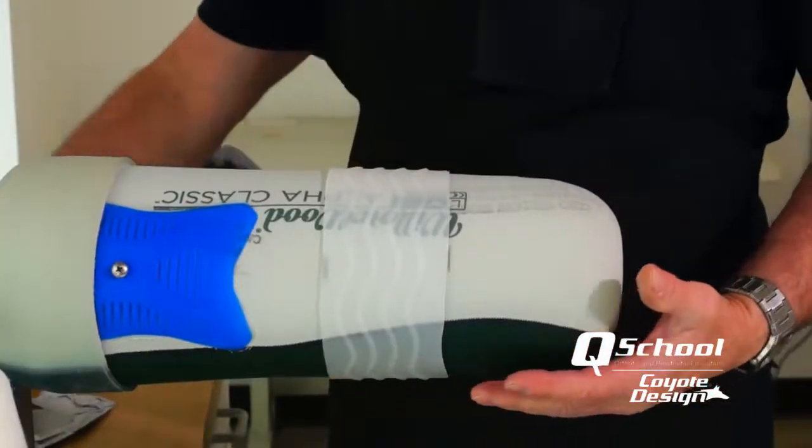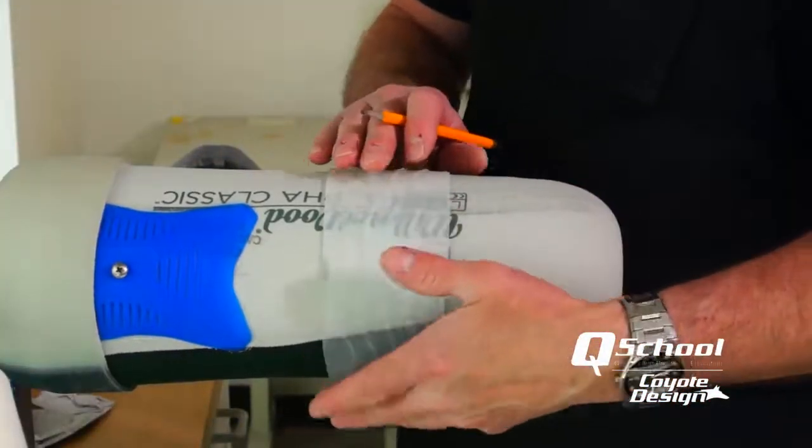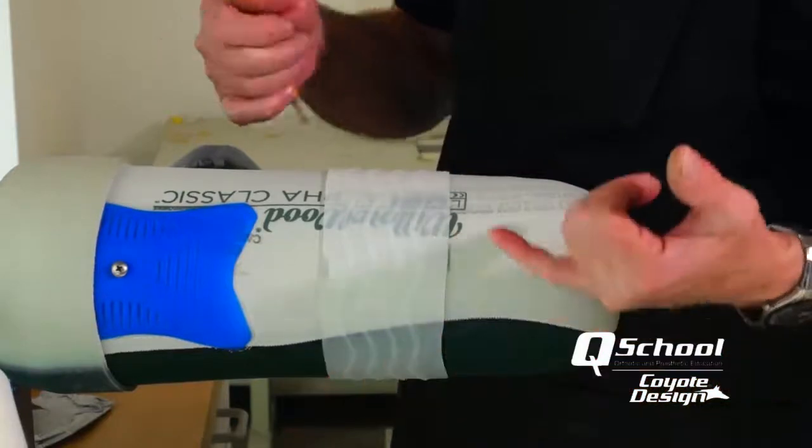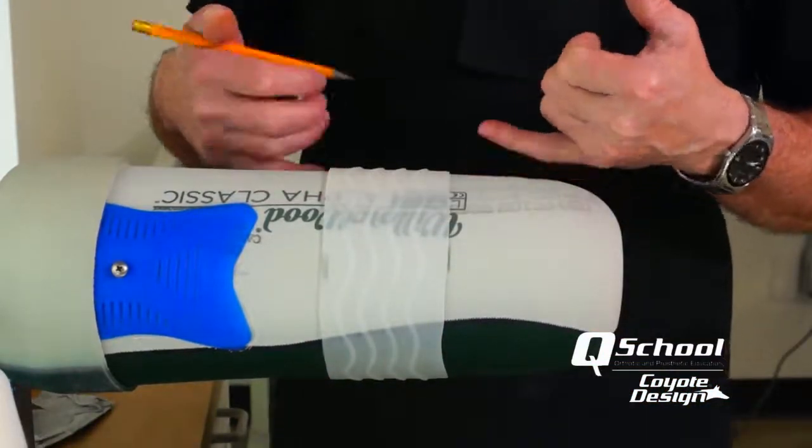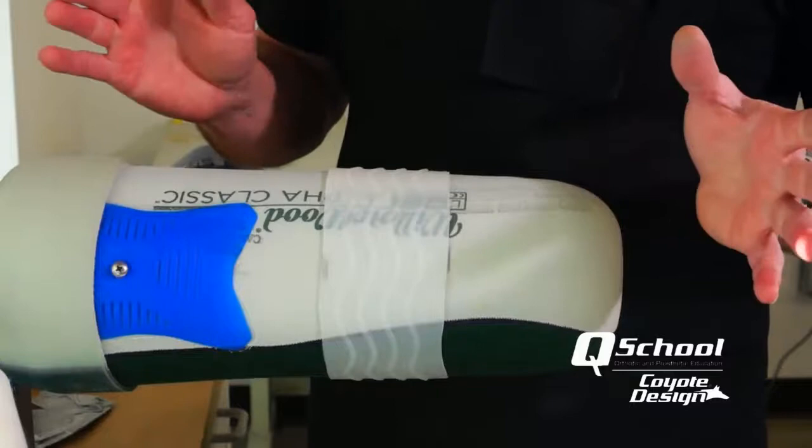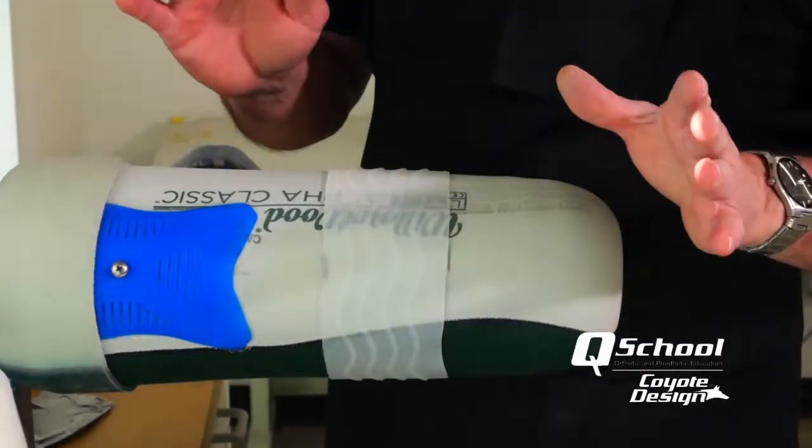All right, our video today is on adhering a Coyote seal band to a liner. The first thing you want to do is get your liner on your patient and determine the best optimal place for his seal band.